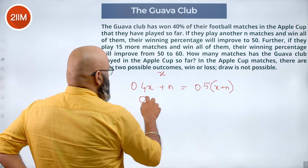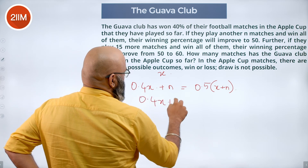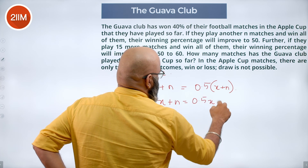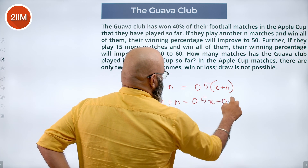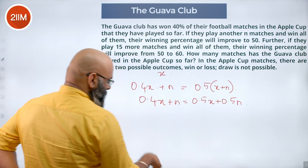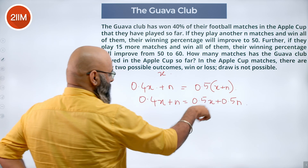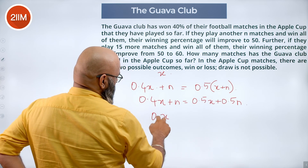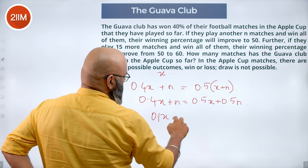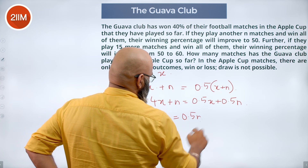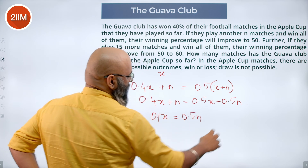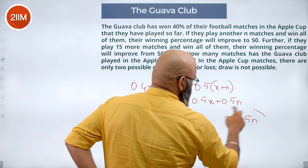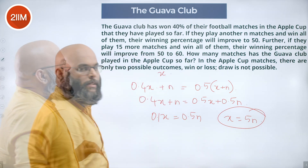So we get: 0.4x plus n is equal to 0.5x plus 0.5n. Solving this equation, 0.1x equals 0.5n, or x is equal to 5n.